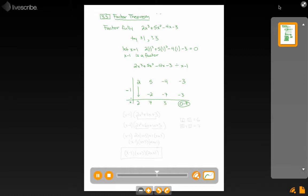Now what does that mean? It means that what I have left over here is 2x squared plus 7x plus 3. So that multiplied by x minus 1 equals my big polynomial. So I'm almost there. I just need to finish factoring this quadratic.